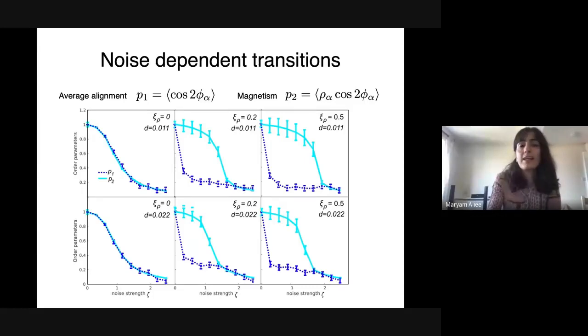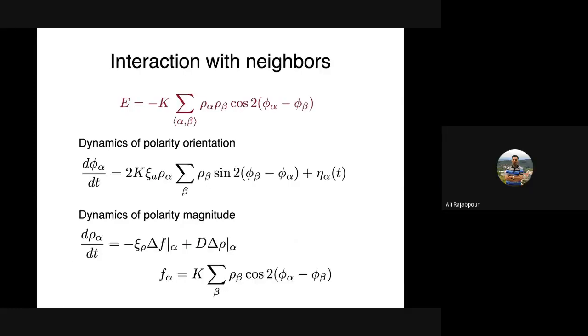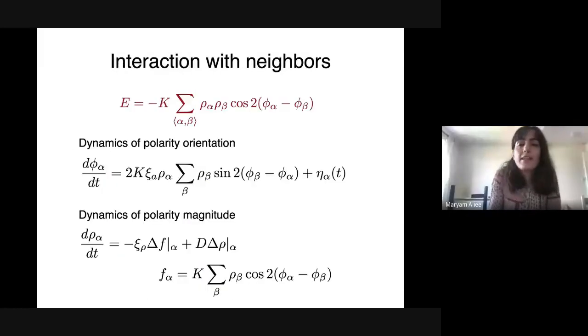We look at two order parameters—the classical average alignment p1 and the magnetization multiplied by rho. When there's no transport, both follow each other like the XY model. When we allow transport between neighbors, the second order parameter persists for a while as a function of temperature and then drops to zero. Sorry, only five minutes left. Okay, yes.